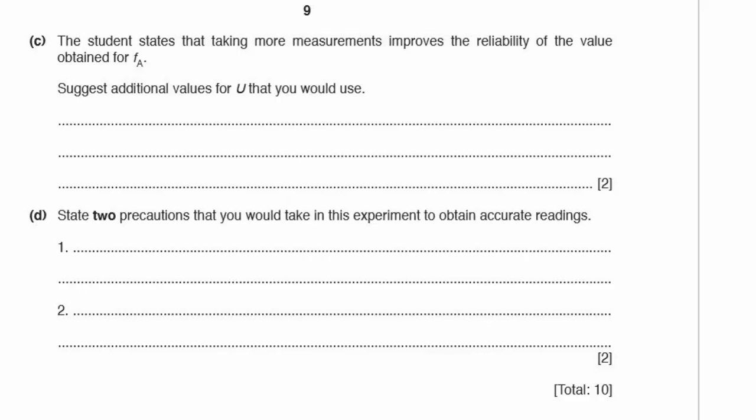Part C. The student states that taking more measurements improves the reliability of the value obtained for FA. Suggest additional values for U that you would use. He's done 20 cm. I think the way forward would be to do 25 cm, 30 cm, 35 cm, and 40 cm. That's four values, they're all different, they're all bigger. Why am I using bigger values? If I use smaller values, the error gets larger. If I go from 20 cm down to 10 cm, the error increases, twice as much. So it's better to get bigger in this case. I'll do it every 5 cm until I hit 40.